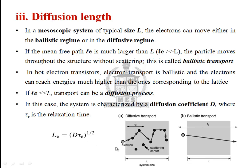For example, a hot electron transistor operates in this regime. Whereas if L_e is less than L, the mean free path is smaller than the system size, and electrons undergo multiple scatterings. This is termed diffusive transport.